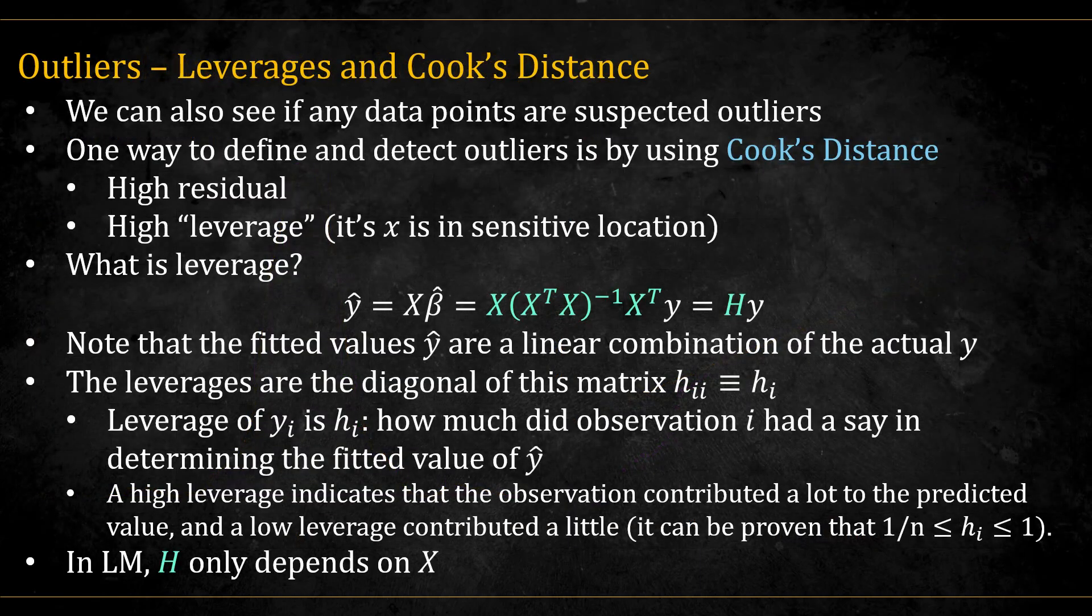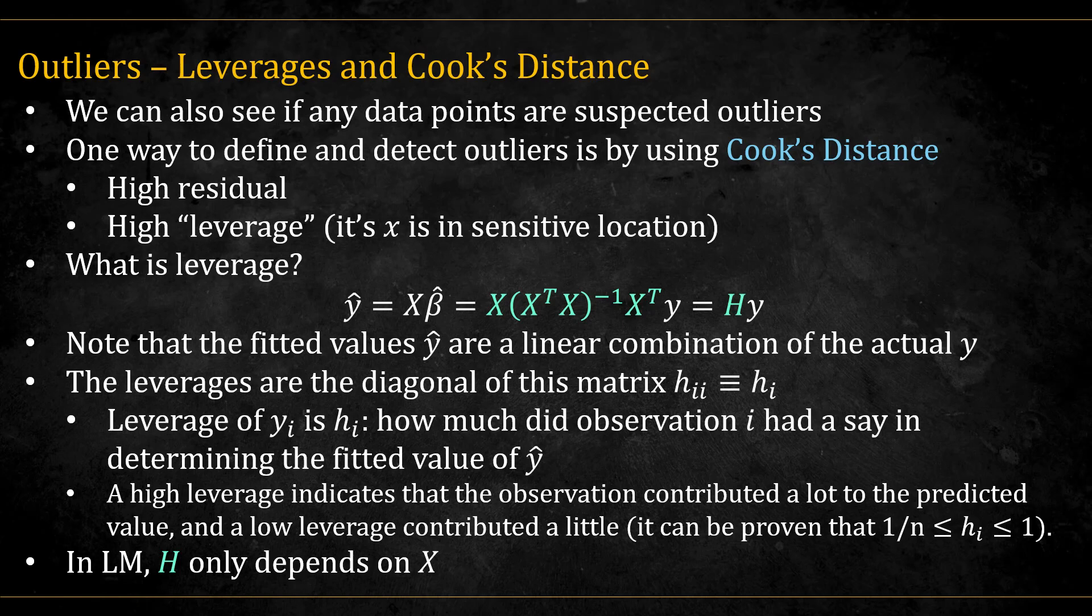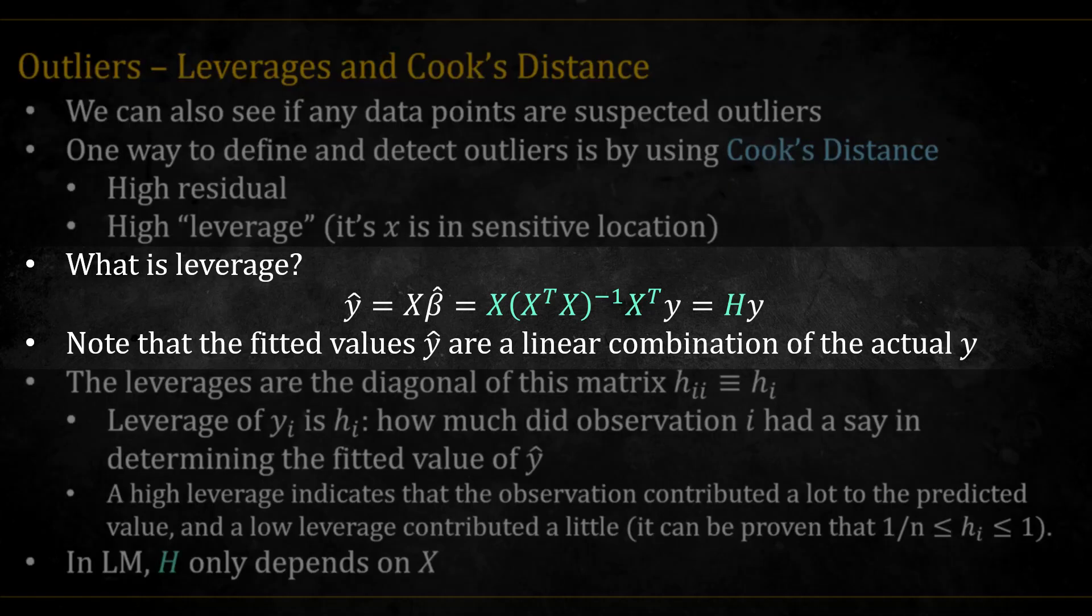There are also ways to automatically detect outliers. One way is by using Cook's distance, which incorporates both the residual value and its leverage. Meaning, is the observation located in a sensitive location? What is leverage?